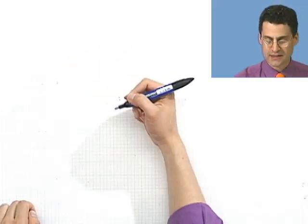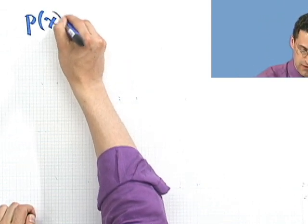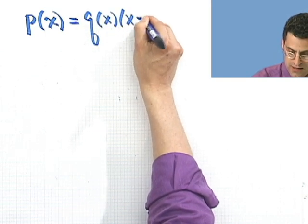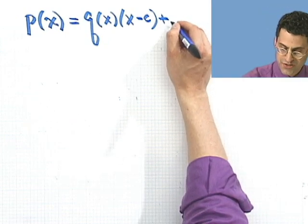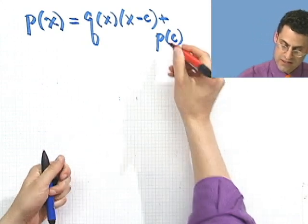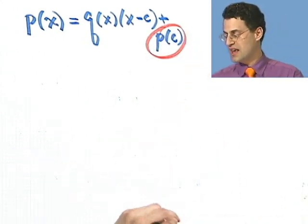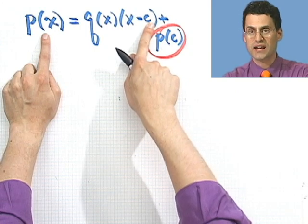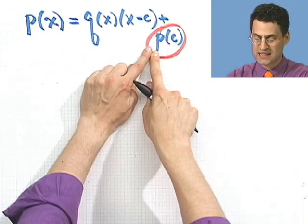So now let's use this remainder theorem to actually help us evaluate polynomials. With the remainder theorem, if you have p of x and you're going to divide it by x minus c, we now know what the remainder is — we'll have some quotient times x minus c, plus the remainder, which is just p of c. So if someone asks us to find p of c, one way is to plug c in wherever you see x. But now we see there's a completely different way: just do the division using synthetic division and see what the remainder is, because the remainder will exactly be the polynomial evaluated at c.